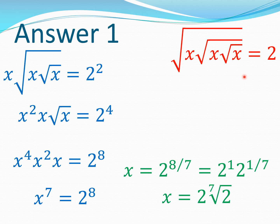One thing which comes to mind immediately is that you could square both sides of the equation. So let's start this process. We square it once so we get x·√x·√x equals 2 squared. We square it once more to get the next equation, and square it once more to get the final equation. At this point you can clearly see that you have x to the power 7 equals 8, because 4 plus 2 plus 1 — the powers of x — total up to 7.